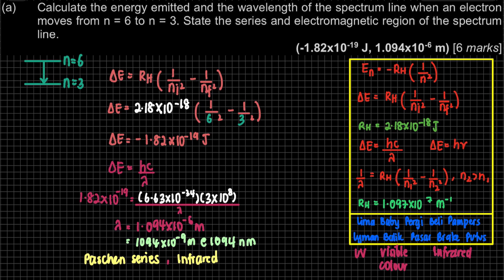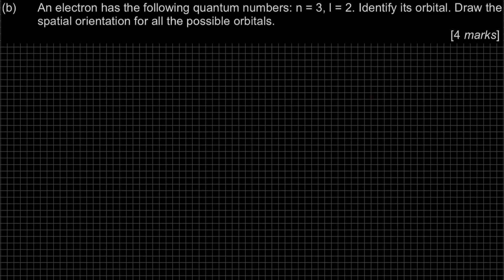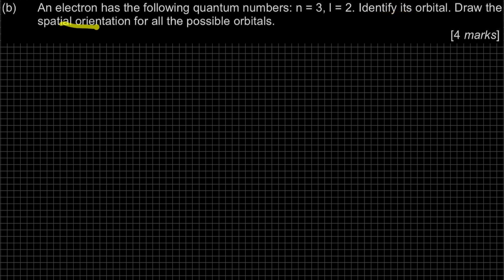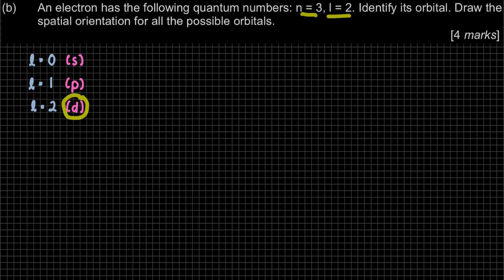That is the solution for question A. Question B: an electron has quantum numbers n=3, L=2. Identify its orbital. Remember that L=0 means S orbital, L=1 is P orbital, and L=2 is D orbital. So with n=3 and L=2, the orbital is 3D.